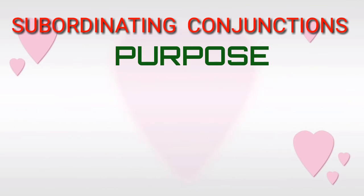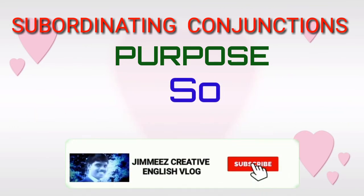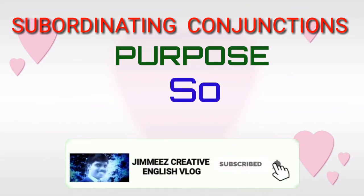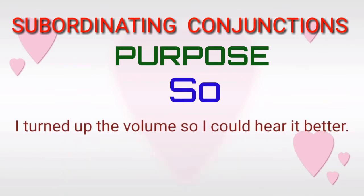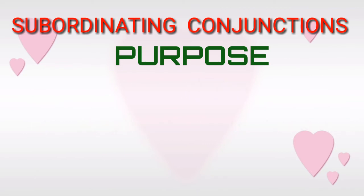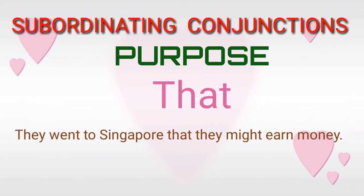Subordinating conjunctions of purpose — 'so.' For example: 'I turned up the volume so I could hear it better.' Subordinating conjunctions of purpose — 'that.' For example: 'They went to Singapore that they might earn money.' Look at the box and find what are the subordinating conjunctions of condition.